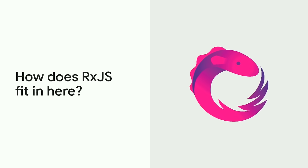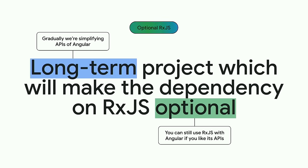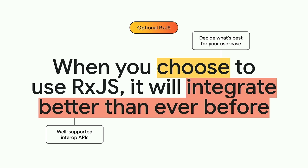Whenever we talk about signals on social media, we often get one question more frequently than others: how does RxJS fit in here? Together with everything we talked about so far, we have one more independent long-term effort — to make RxJS optional. Optional means we'd like to enable you to build applications without strictly requiring RxJS in your bundle. This way, we can simplify Angular's learning journey so you don't have to learn RxJS from the beginning. It's also going to enable you to ship applications with minimal dependencies. But importantly, for developers that choose to use RxJS, we want that integration to be better than it ever has been, by introducing a set of interop APIs for Angular and RxJS.